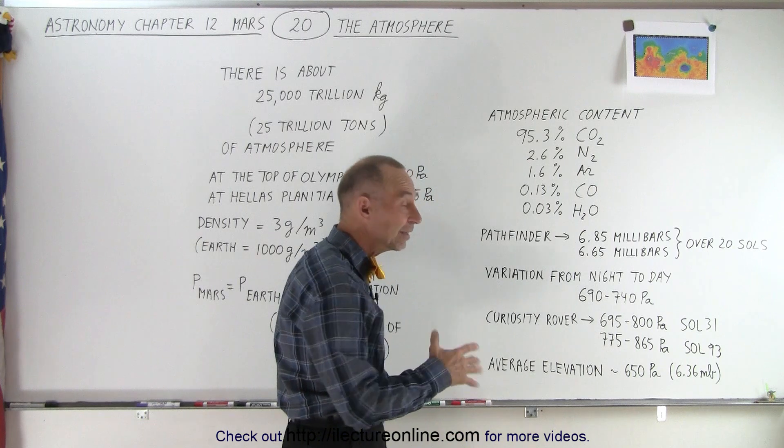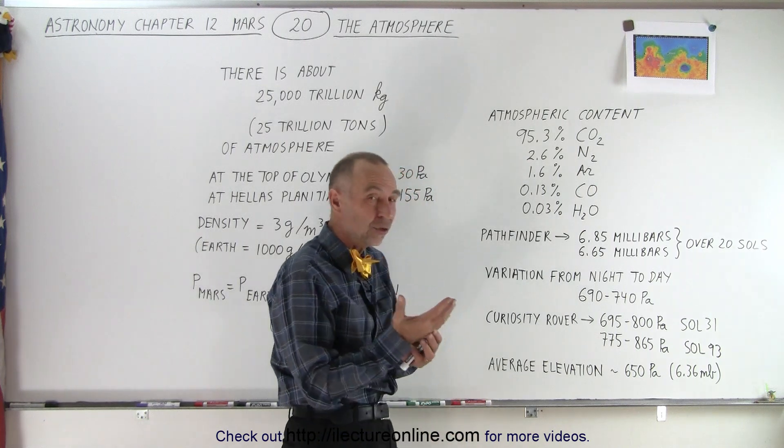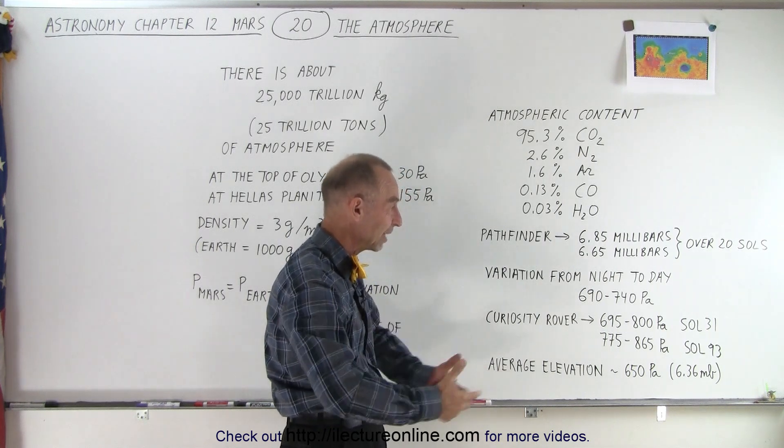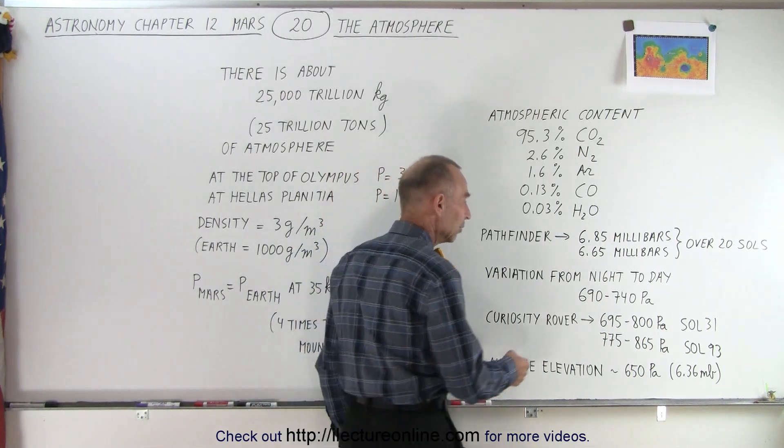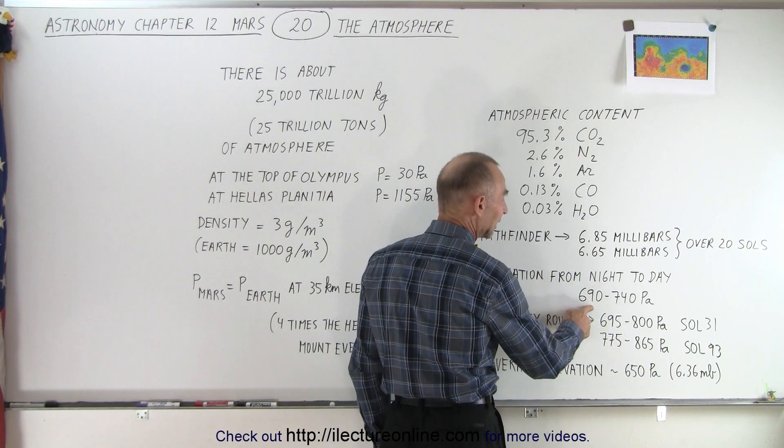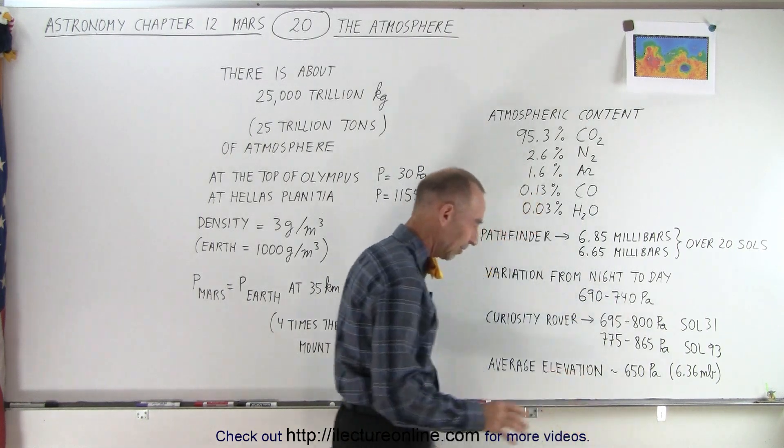The variation from night to day is even more severe because it gets so cold at night that the air becomes more dense, and then in the daytime, the air becomes less dense because of the heating effect of the sun. Notice that the difference between day and night is as much as from 690 to 740 Pascal at a particular site.